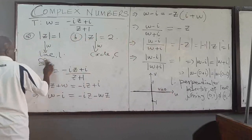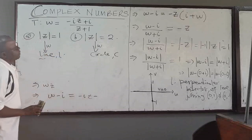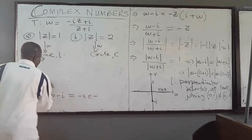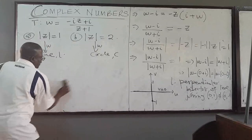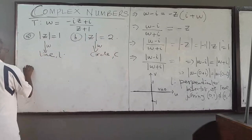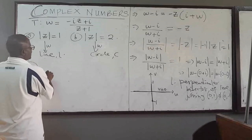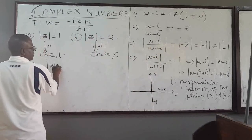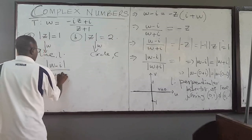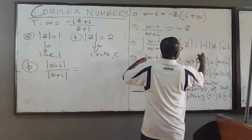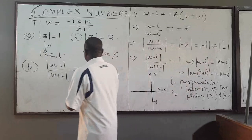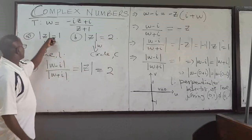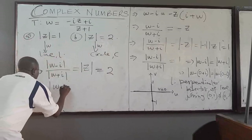Now let's do part B. We'll still use the same transformation. When we manipulated this transformation, we got that the absolute value of (W - i) over (W + i) equals the absolute value of Z. In question B, the absolute value of Z is 2, not 1. So this equals 2. Now we are ready — the locus we need to find is the absolute value of (W - i) equals 2 times the absolute value of (W + i).